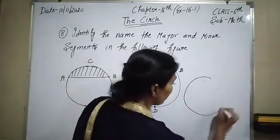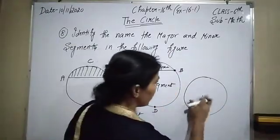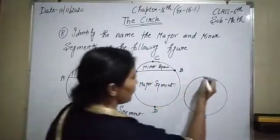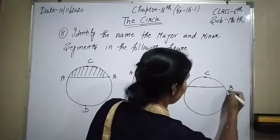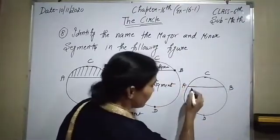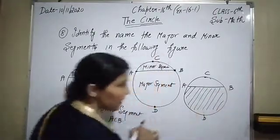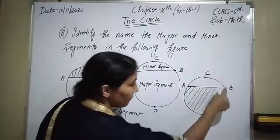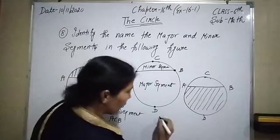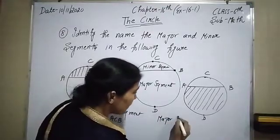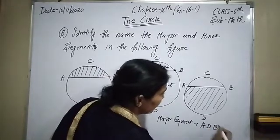Again I am going to draw this figure. Here is the center of the circle. Here is point C, here is ACB, here is AB, and here is point D. This portion is our major segment — we can say ADB. So what is our major segment? Major segment: that is ADB.